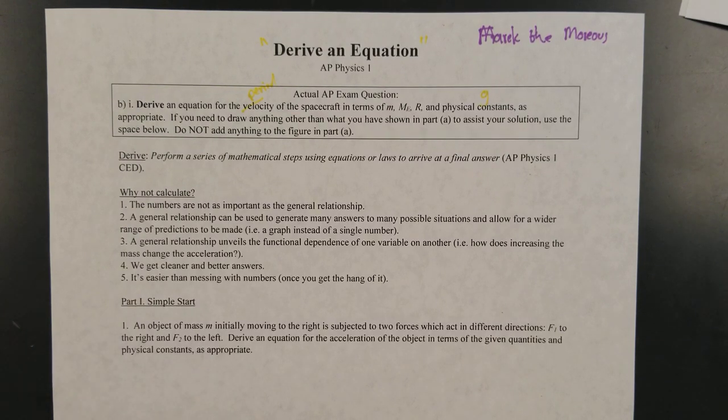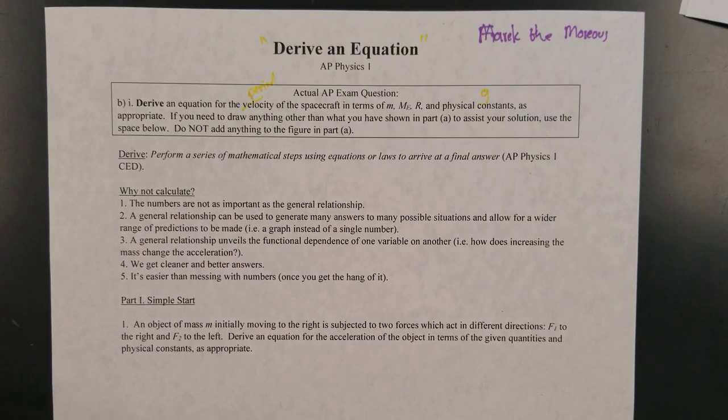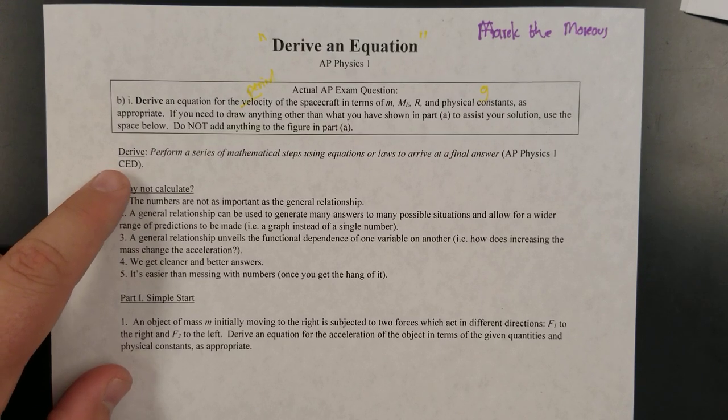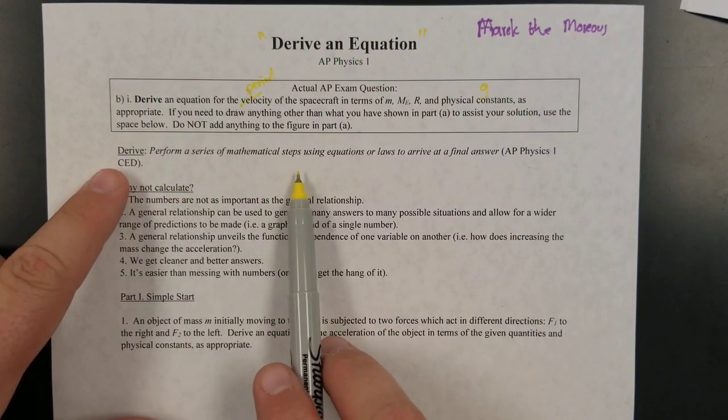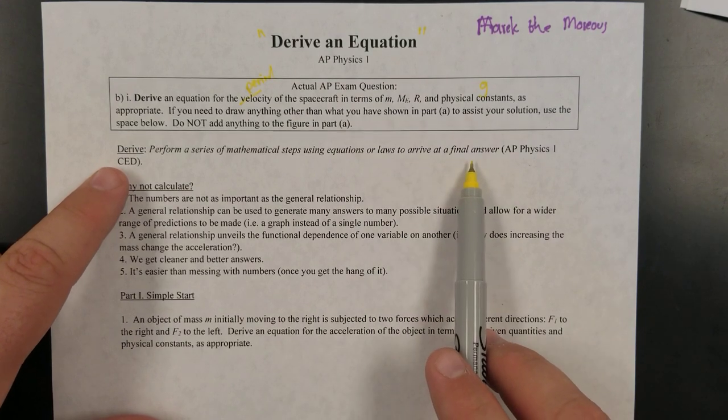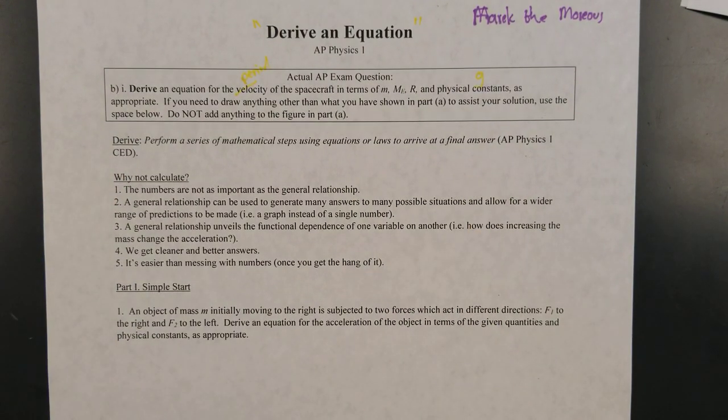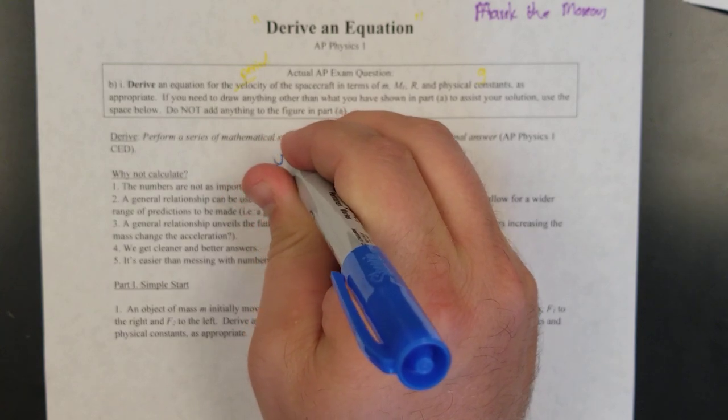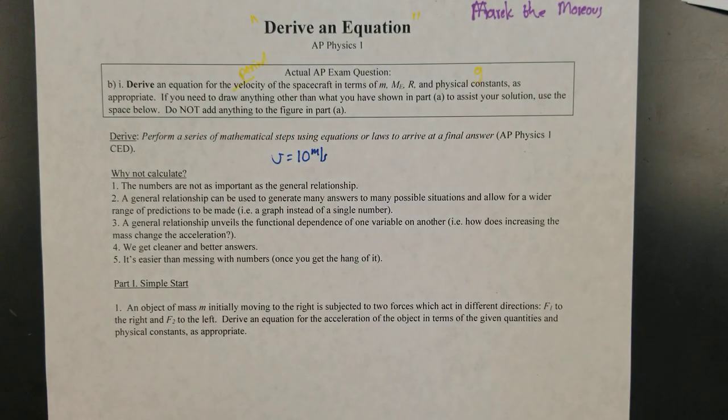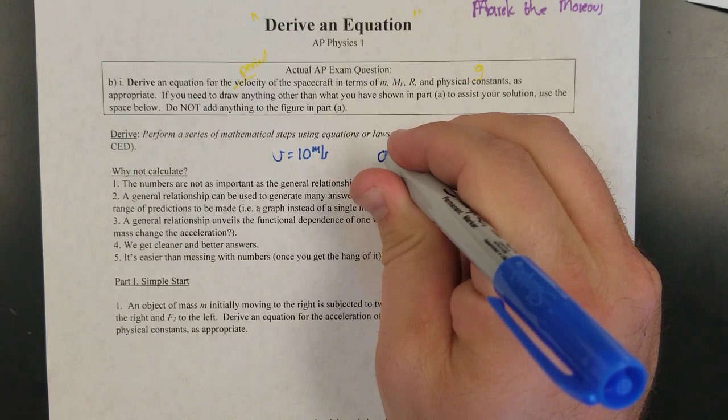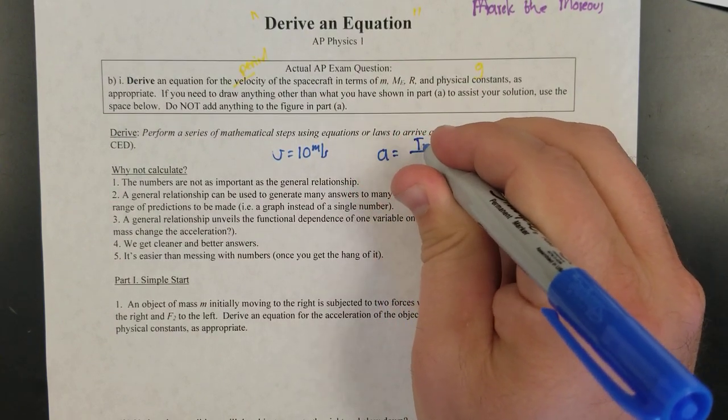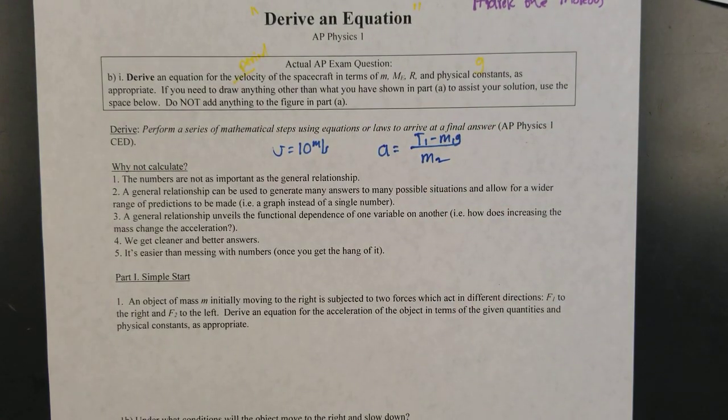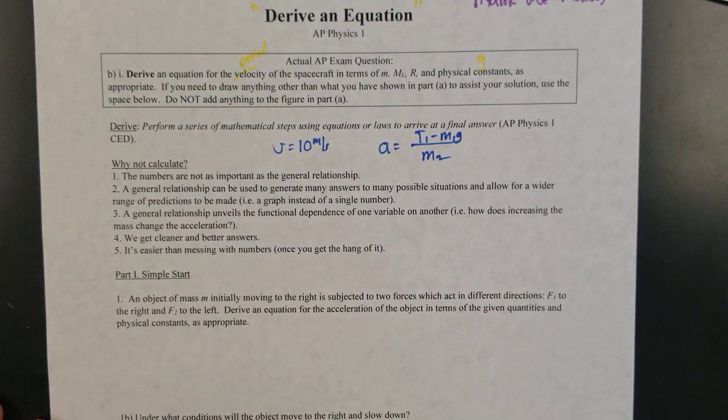And so this is a skill that you are going to be tested on and it's really important for a couple of different reasons. So from the AP Physics 1 exam and course description guide, derive is defined as perform a series of mathematical steps using equations or laws to arrive at a final answer. Usually what that answer looks like is an equation or an expression. So instead of something like velocity equals 10 meters per second, it might look something more like acceleration equals T1 minus M1 G over M2. That would be like what the final answer would look like when you're asked to derive an equation.